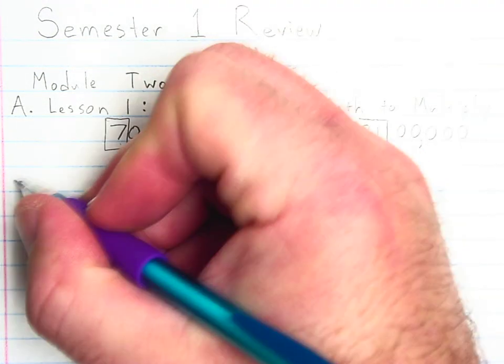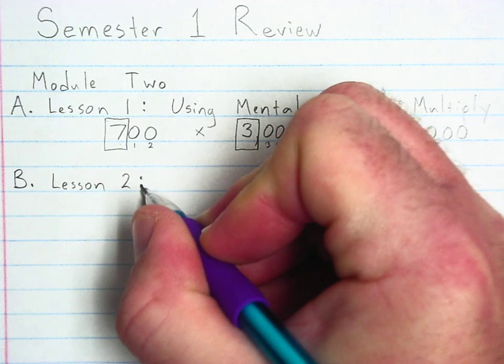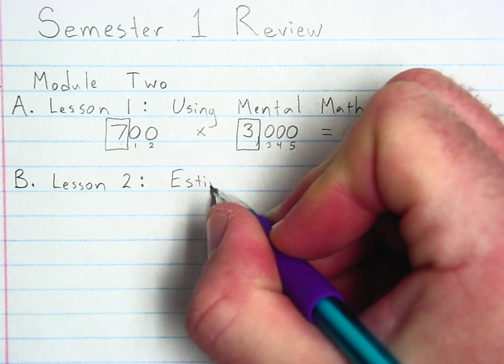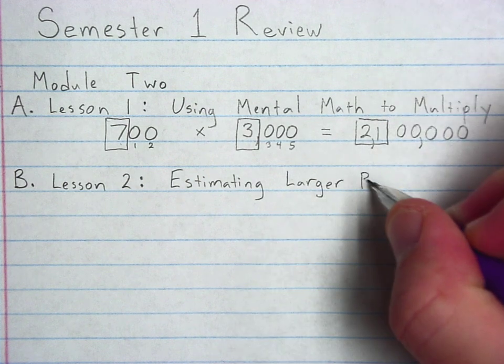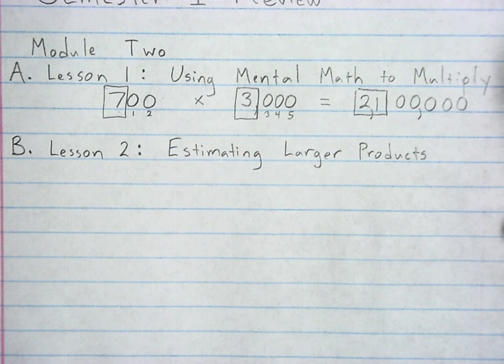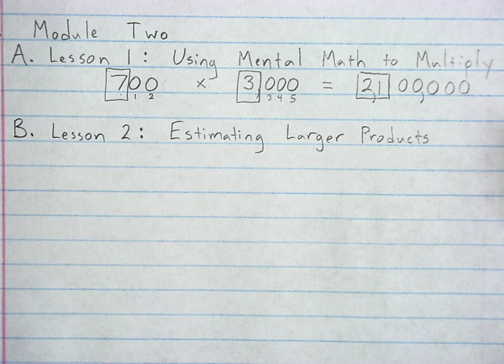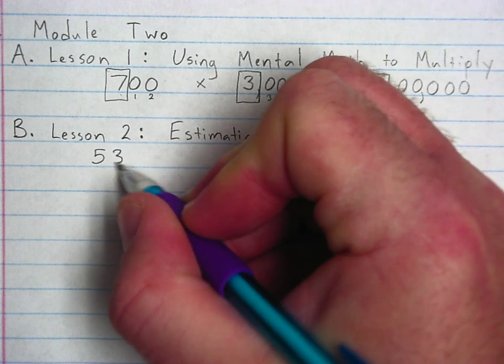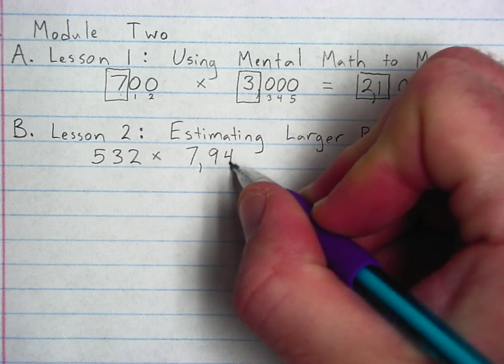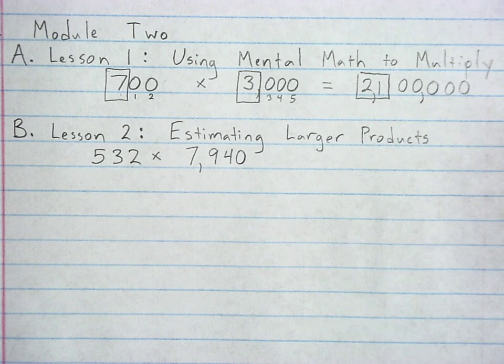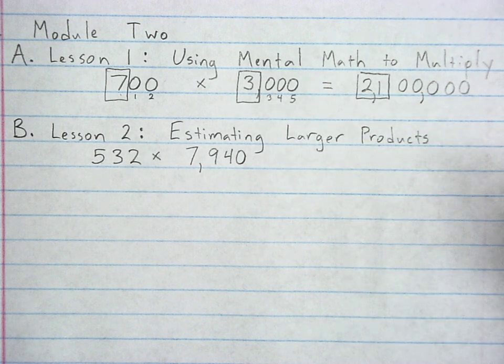Okay. Letter B. Let's talk Lesson 2. Lesson 2 was about estimating, and specifically estimating larger products. So, building off of what we just did in Lesson 1, if I give you something that is not made of mostly zeros, if I give you something more like this, 532 times 7,940, wow, I got 1, 0, not terribly helpful. If I can change this into something that looks like that, then I can use mental math to multiply.